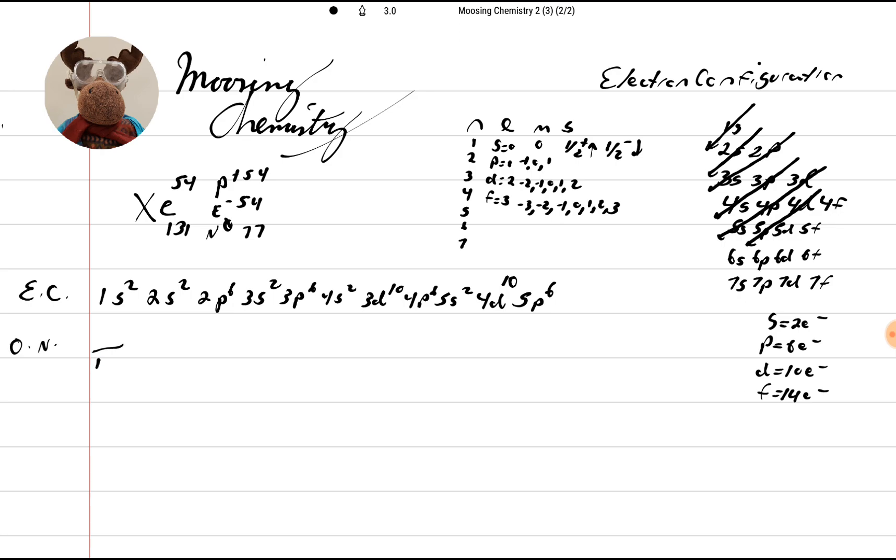So our 1S has an up arrow and a down arrow. Our 2S has an up arrow and a down arrow. Then we go 2PX, 2PY, and 2PZ. So we're going to go 1, 2, 3, 4, 5, and 6.